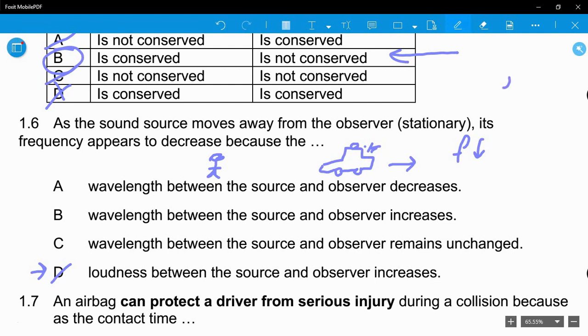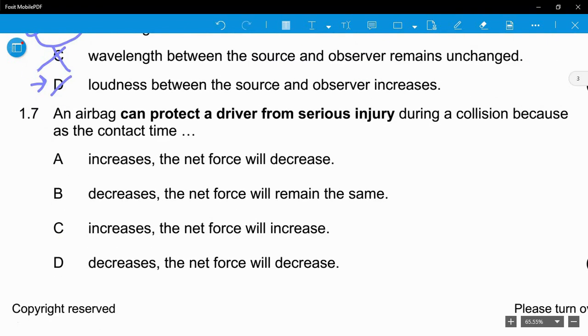We know that wavelength is inversely proportional to frequency. So frequency goes down, that means wavelength must go up. Let's look for when wavelength increases. The wavelength between the source and observer decreases is incorrect because wavelength is increased. It doesn't remain unchanged. It has to be B - the wavelength increases. Quite simple.